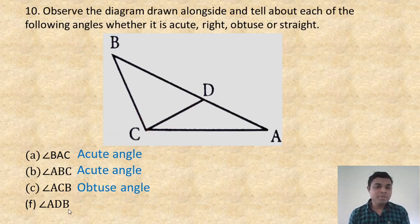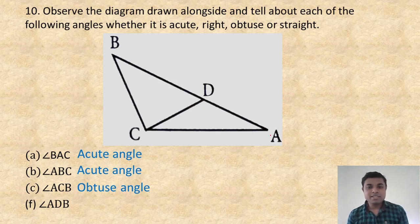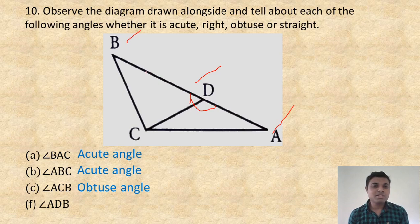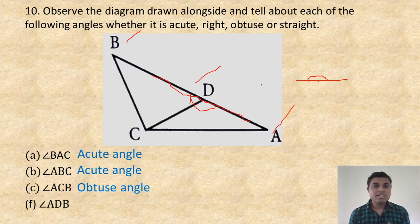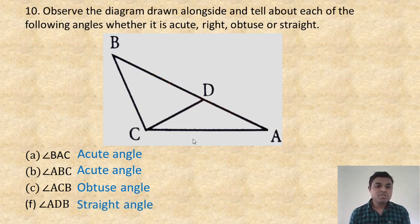Angle ADB: here it is A, here it is D, and here it is B — this angle. Just see — this is a straight line, so any angle like this is a straight angle. Write here: straight angle. Clear?